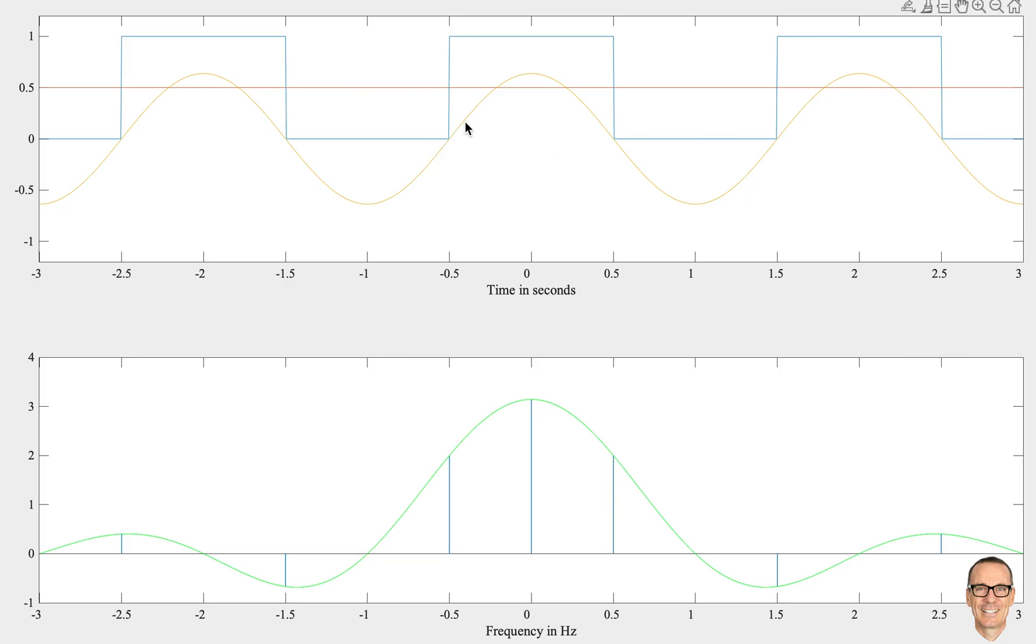When we add the red to the yellow, it's going to shift the yellow up and it's going to start to look like the blue waveform. But it's not exactly the square wave yet, so we need to add other sinusoids to it to start to make it look more like the blue waveform.